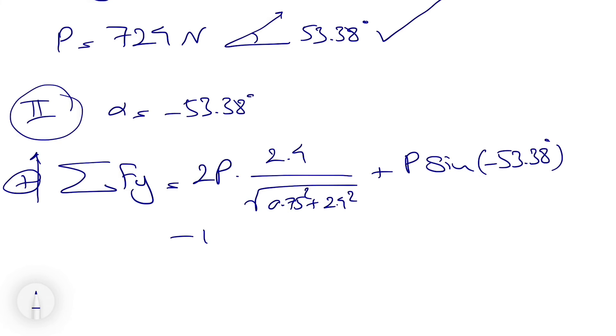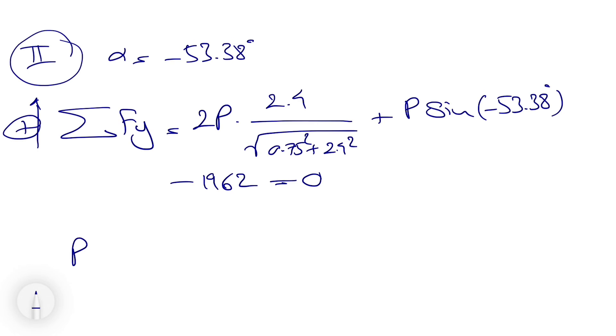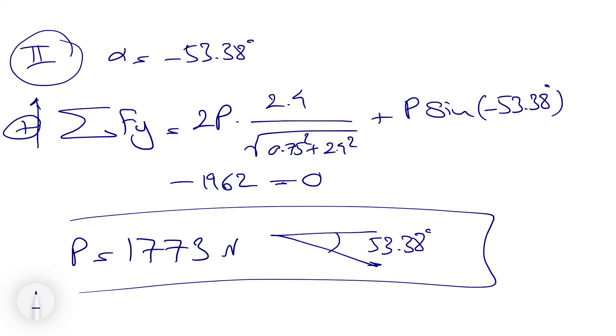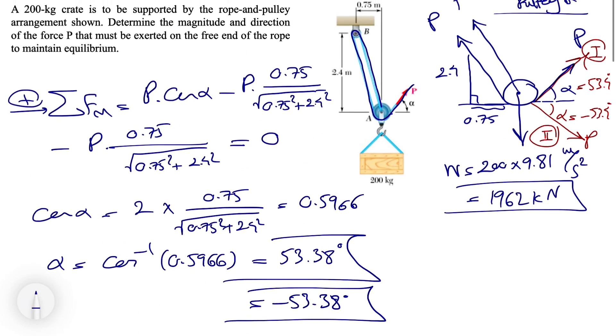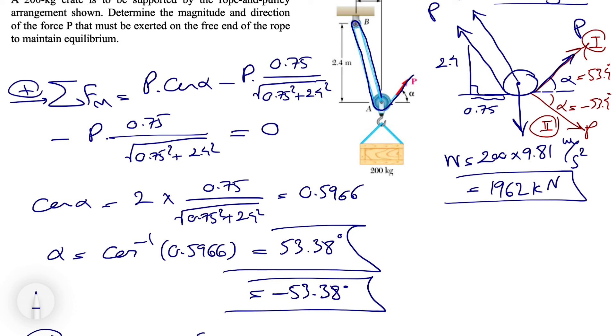And on the other side, we'll have plus P sine of alpha, which alpha this time is minus 53.38, and the weight would be the same point, minus 1962 equals zero. From here we will find another P, which is 1773 newtons.